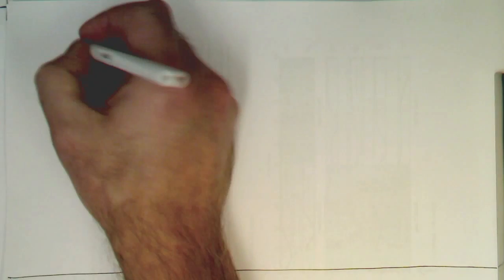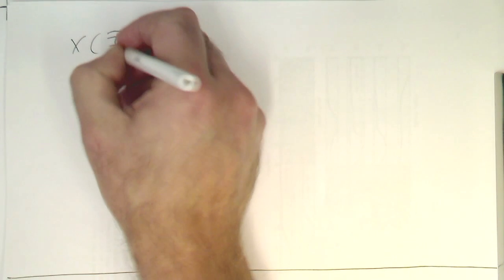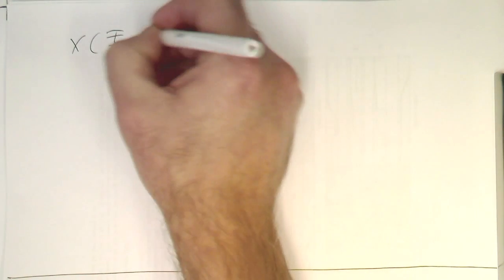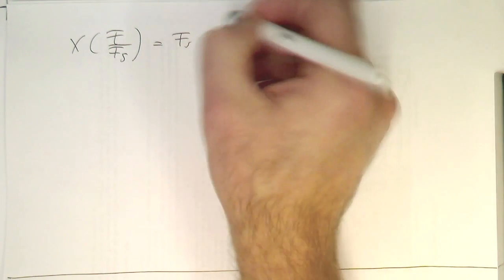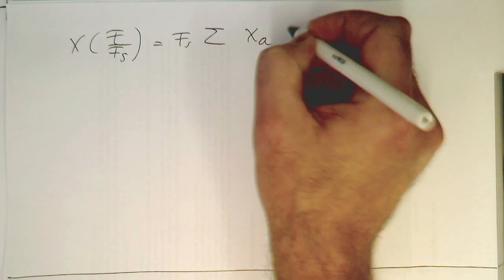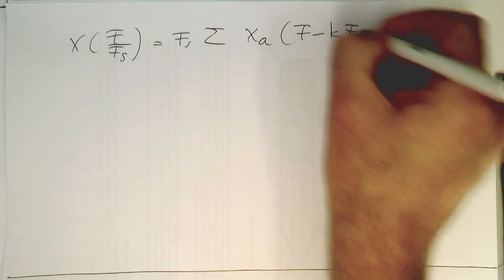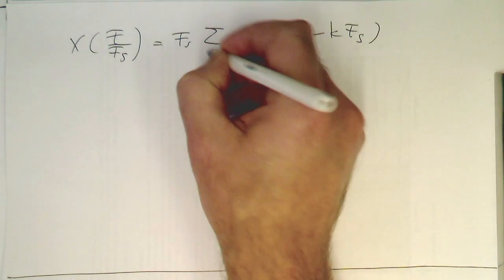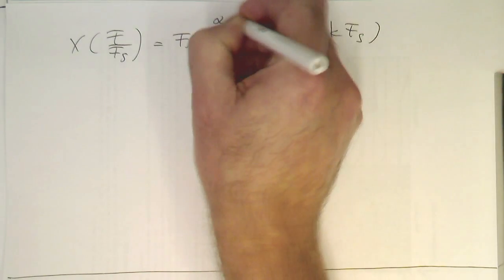Let's look at a graphical representation of our formula here. Just write this back in here, so that we have it in front of us. Y(F/Fs) = Fs * sum from k equals minus infinity to plus infinity of Xa(F - k*Fs).